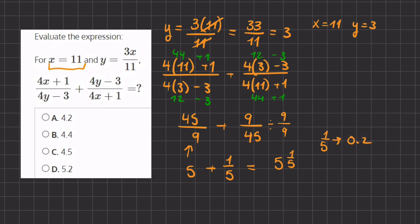So when we turn this mixed number into a decimal, we get 5.2, which will be our final answer, and that is answer D.